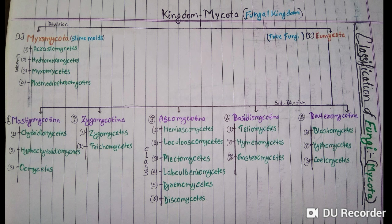The third subdivision, Ascomycotina, is further divided into six classes: first is Hemiascomycetes, second is Loculoascomycetes, third is Plectomycetes, fourth is Laboulbeniomycetes, fifth is Pyrenomycetes, and sixth is Discomycetes.